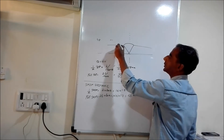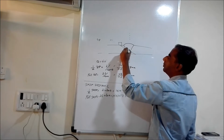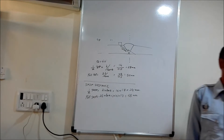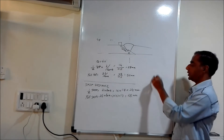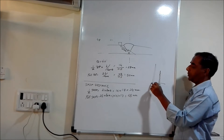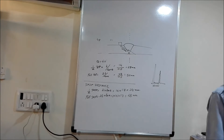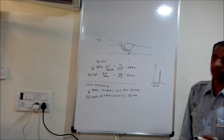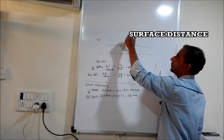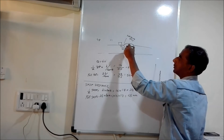For example, we are scanning beam path 16 mm. When you measure beam path, this is 16 mm. Now using this data, we have to find two things: surface distance and depth.